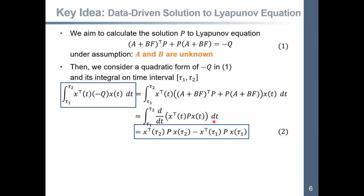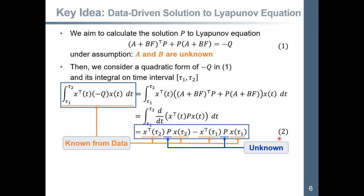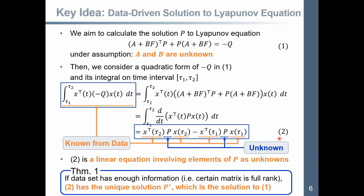In this equation, we note that these values are all available from obtained data, and P is unknown. In other words, this equation is a linear equation involving elements of P as unknowns. Then, the following theorem holds. If dataset has enough information, that is, certain matrix is full rank, then equation 2 has a unique solution, which is the solution to equation 1.